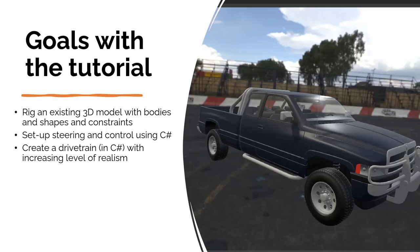In this tutorial we're going to model a vehicle - in this case a Dodge Ram 1500. We're going to rig it using rigid bodies, shapes, constraints, and materials. We're going to set up the steering using C# scripting and we're also going to create a drivetrain where we step by step take it towards a more realistic drivetrain.